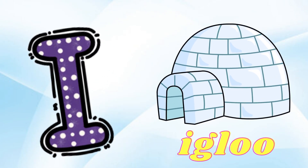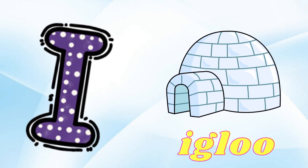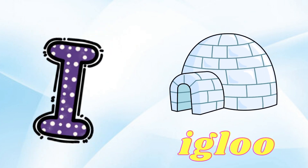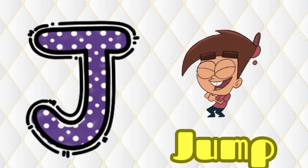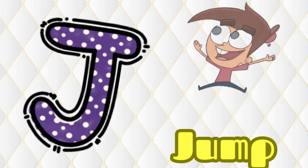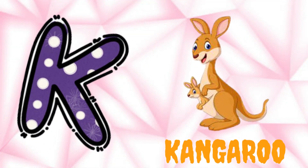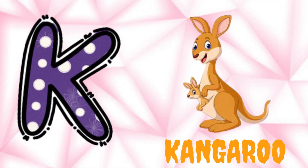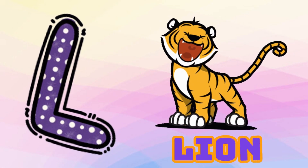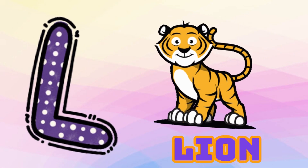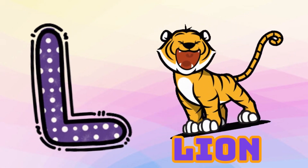I is for Igloo, I-I-Igloo. J is for Jump, J-J-Jump. K is for Kangaroo, K-K-Kangaroo. L is for Lion, L-L-Lion.